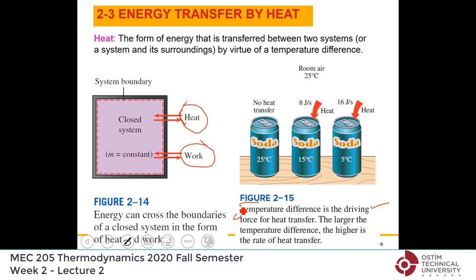For example, if the system is at 20°C and outside is 30°C, energy entering is heat because the temperature difference is the reason for the energy transfer. The larger the temperature difference, the larger the heat transfer rate.